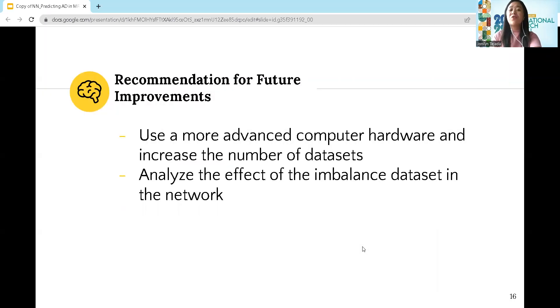For recommendations for future improvement, it is recommended to use more advanced computer hardware and increase the number of datasets. If possible, we could use the complete datasets available in Kaggle community. Second is to analyze the effect of imbalanced datasets in the network.